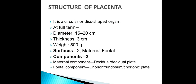There are two surfaces — maternal surface and fetal surface. Both surfaces are divided by different septa, leading to the formation of cotyledons. It has two components: the maternal component called decidua basalis, and the fetal component called chorion frondosum or the chorion plate.